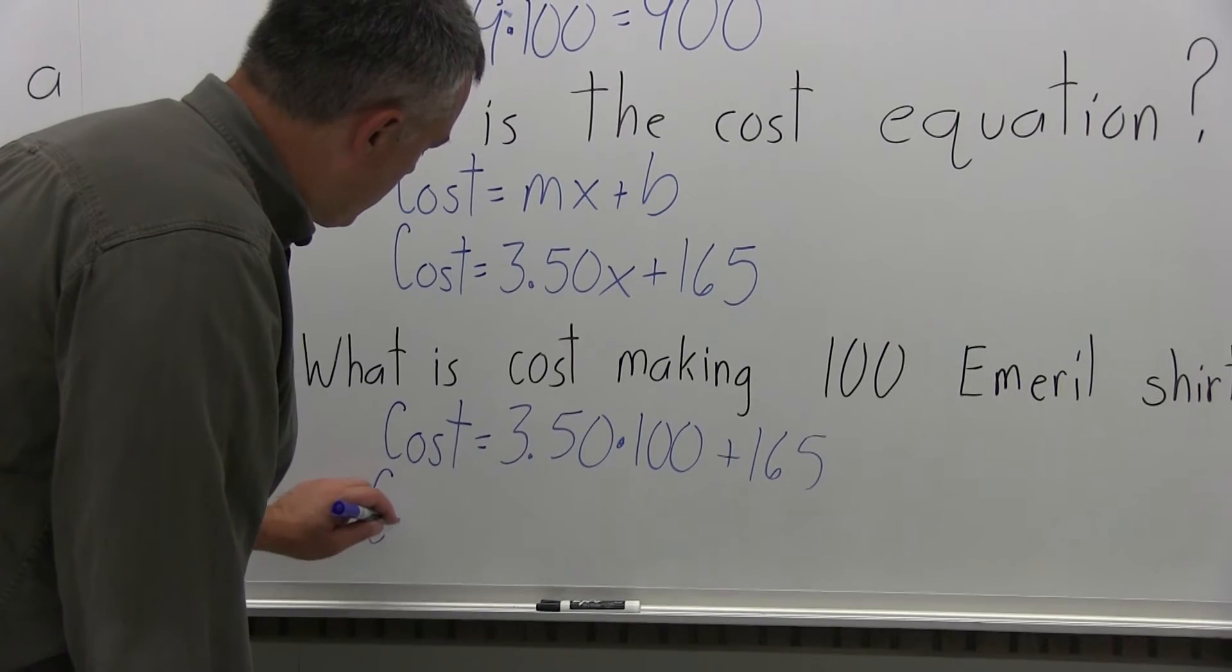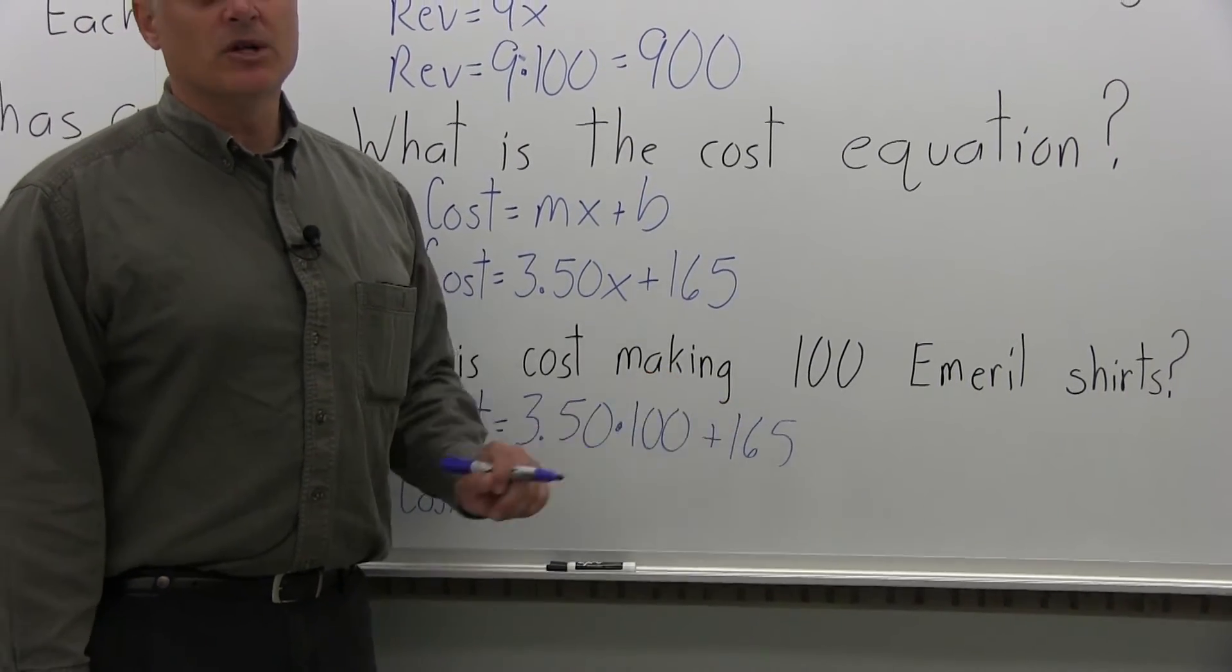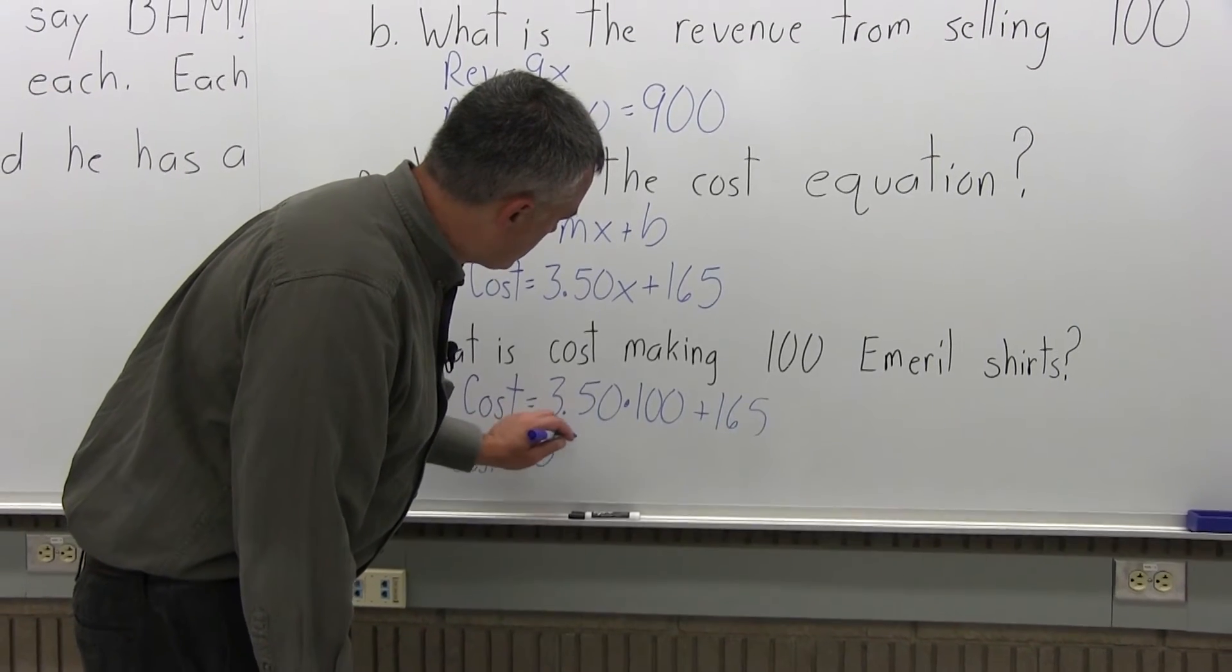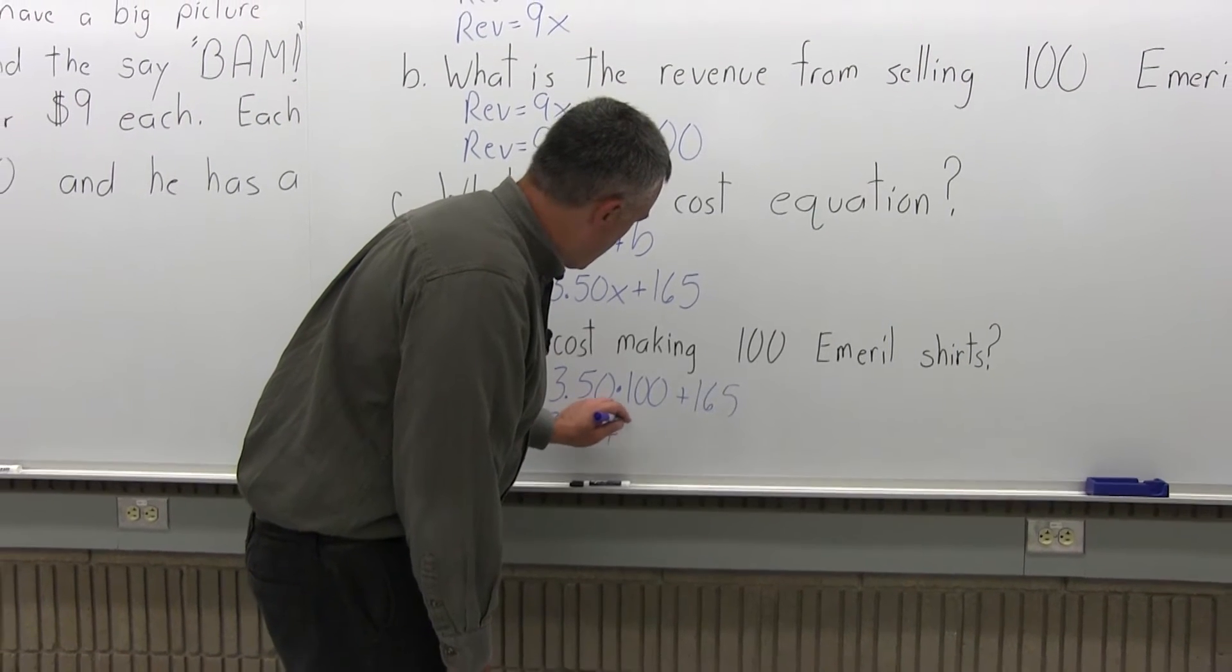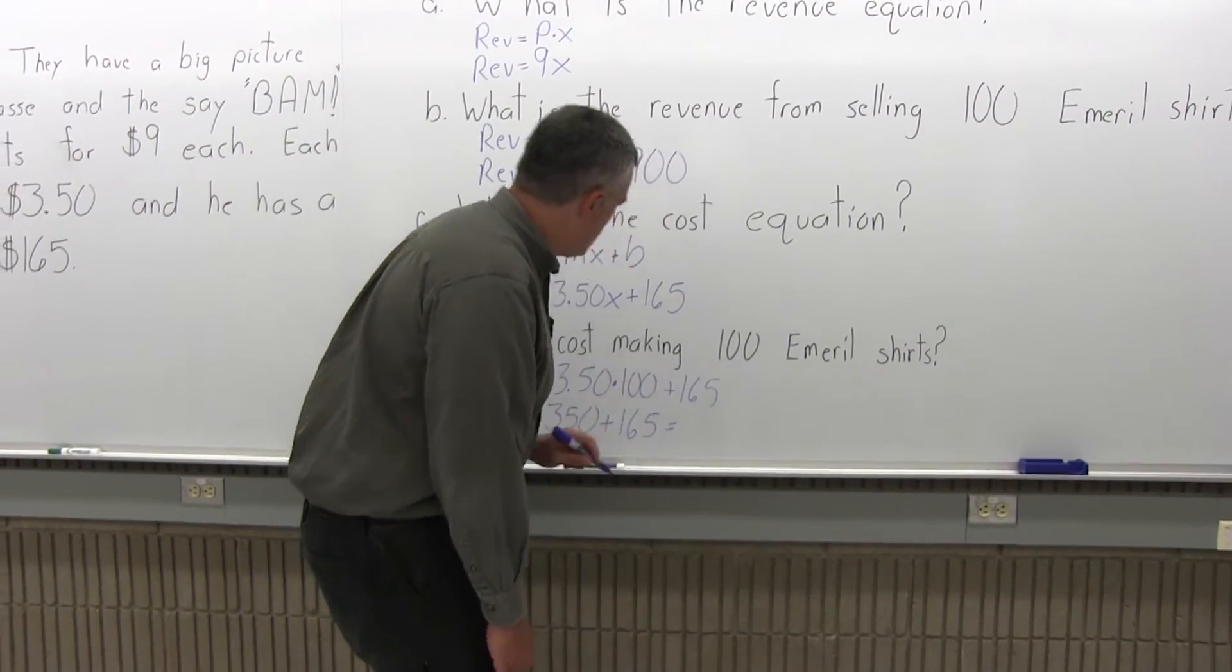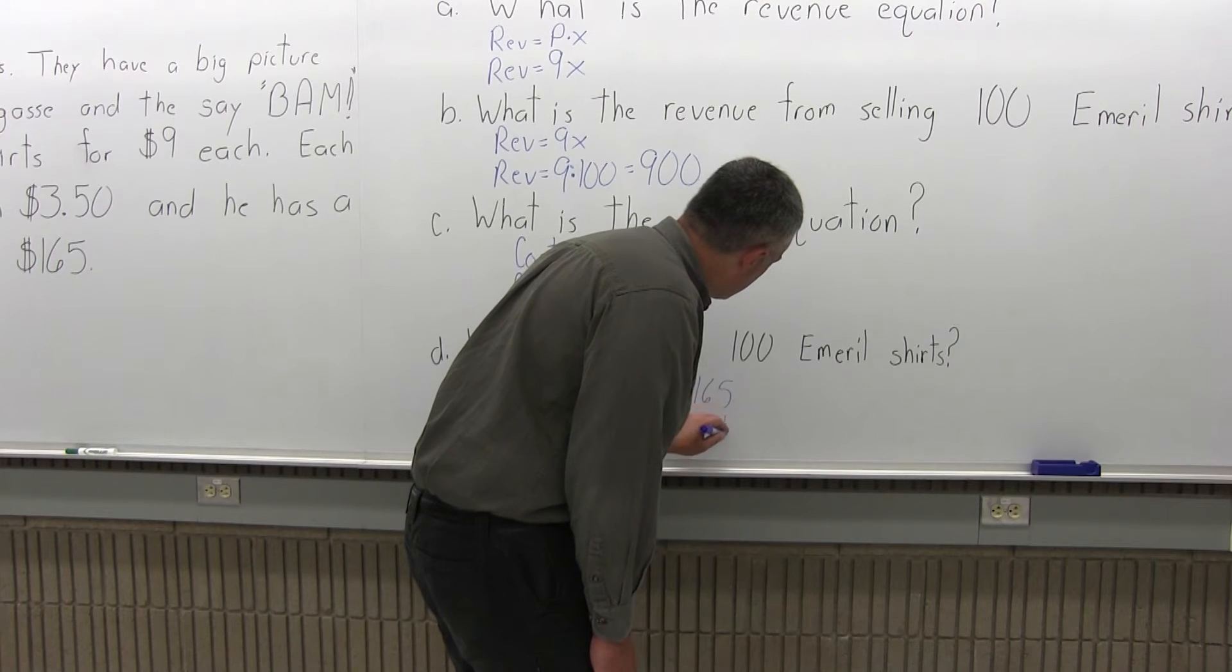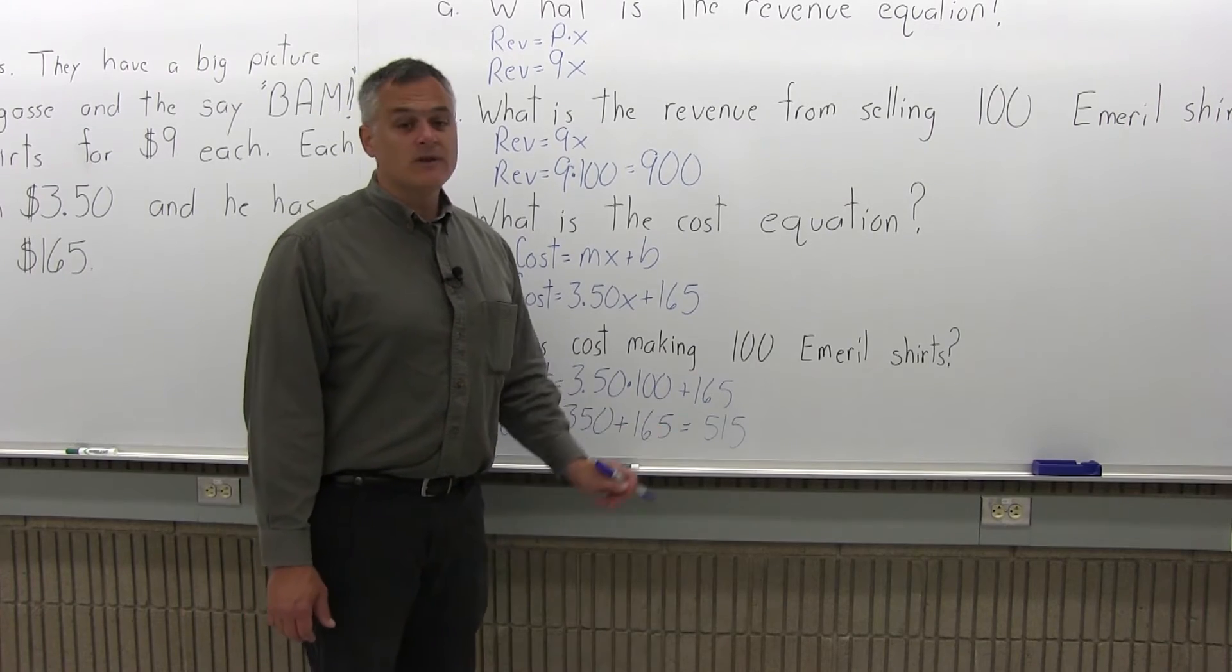So when you have a problem like this with a multiplication and an addition, you have to do the multiplication first, that's that PEMDAS order of operation. So 3.50 times 100 is 350 and then we have to add 165 to that. So now if you add 350 plus 165, it should come out to 515. So the cost to make 100 t-shirts is $515.